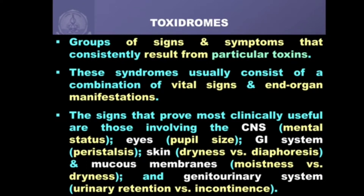The important signs looked at in a toxidrome relate to: the CNS by way of mental status examination; the eyes reflected as pupil size; the gastrointestinal system reflected as peristalsis; skin manifestations — either dryness or sweating; mucous membranes — moist or dry; and the genitourinary system manifesting as retention or incontinence. There are several toxidromes today, maybe 20 or more, but we will look at 10 of the commonest, important from both examination and clinical practice perspectives.